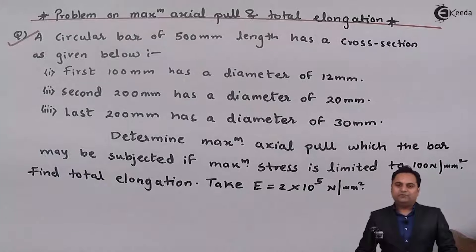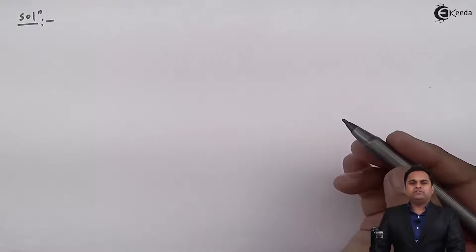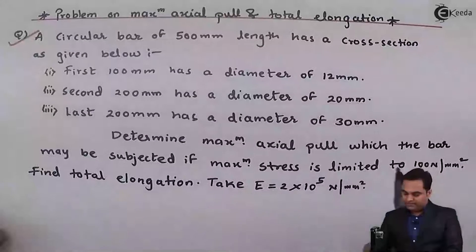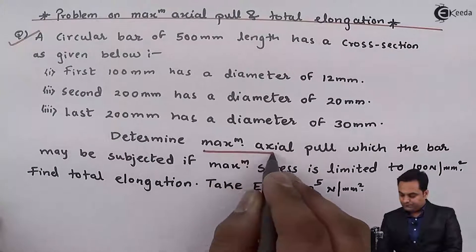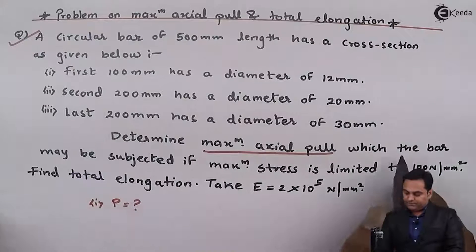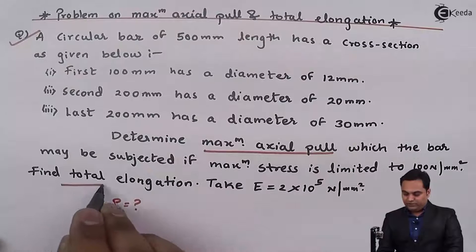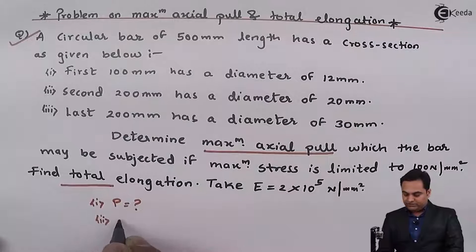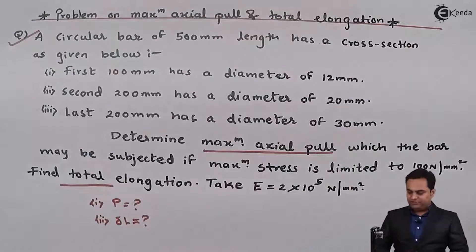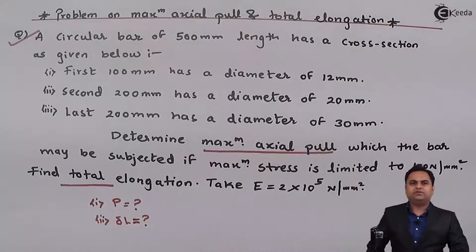There are two unknowns in this question. First, we have to find the maximum axial pull, denoted by P. Second, we have to find the total elongation, denoted by delta L. Since the length is divided into three parts having three different diameters, it is necessary that we start by drawing the diagram.